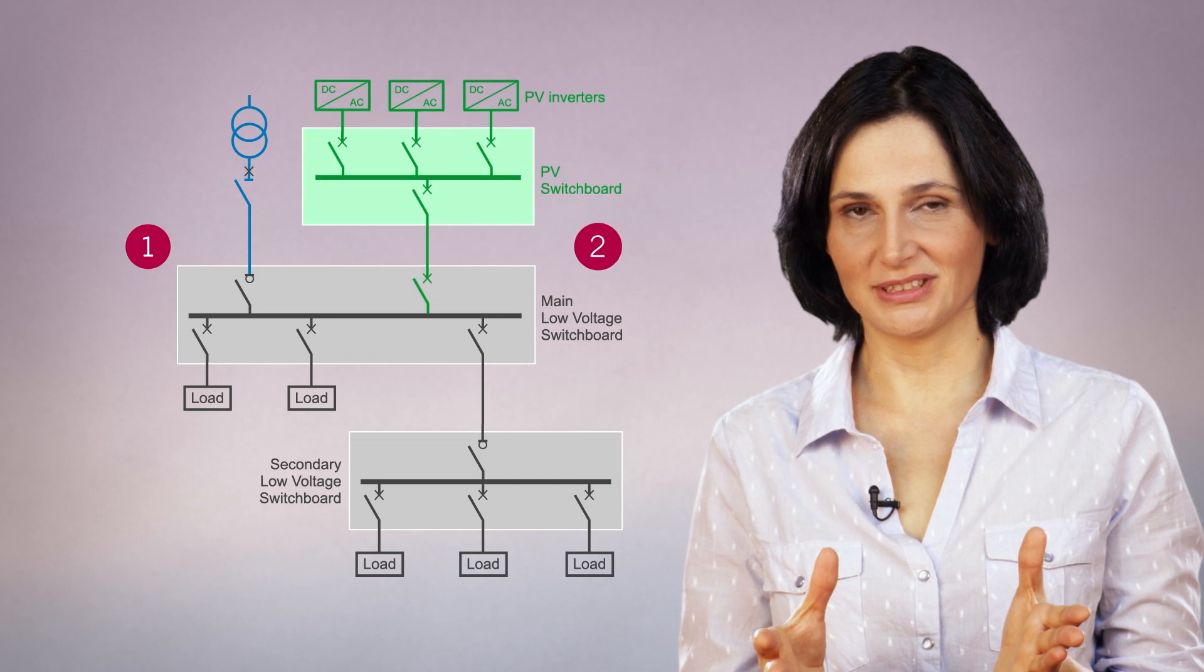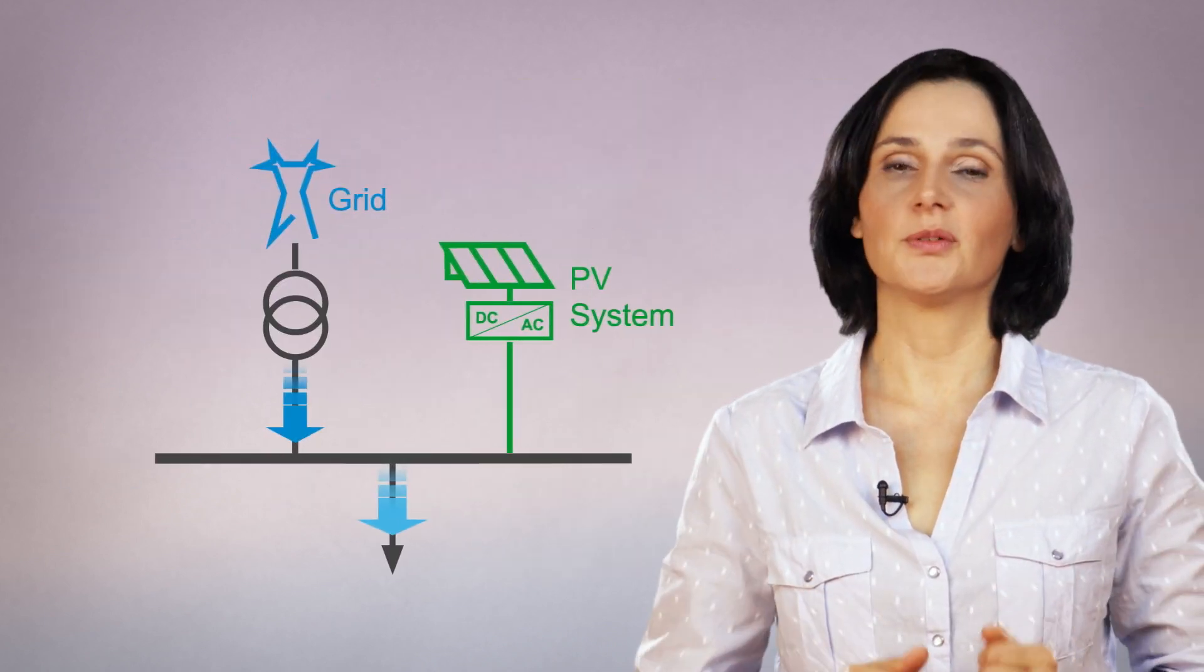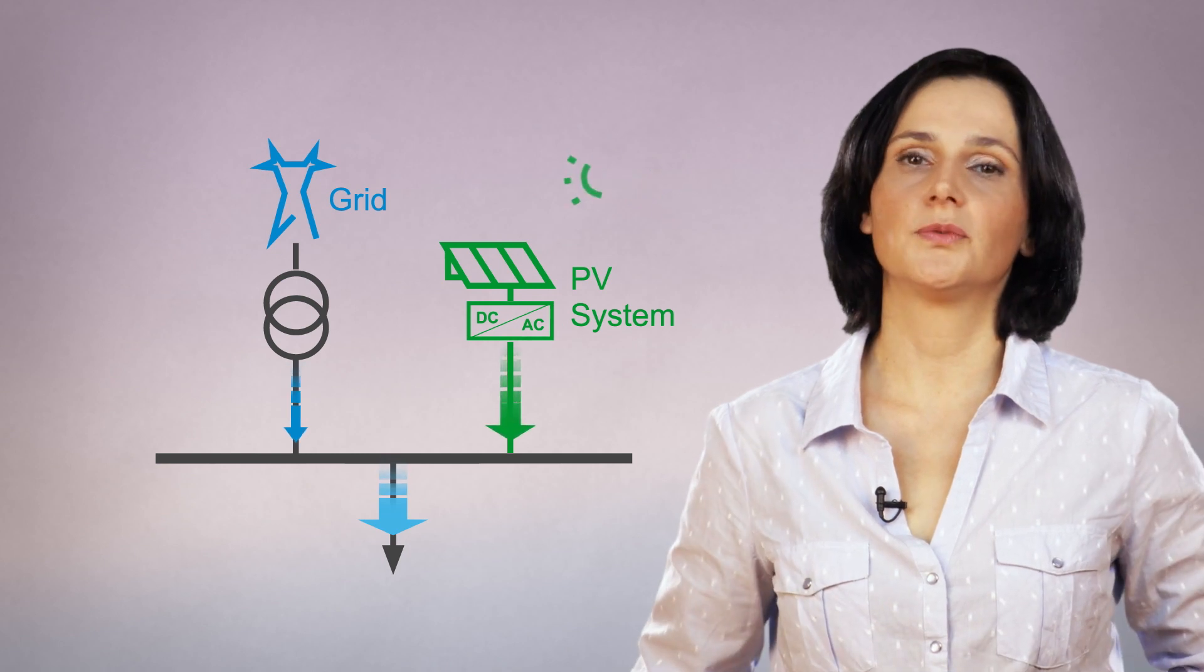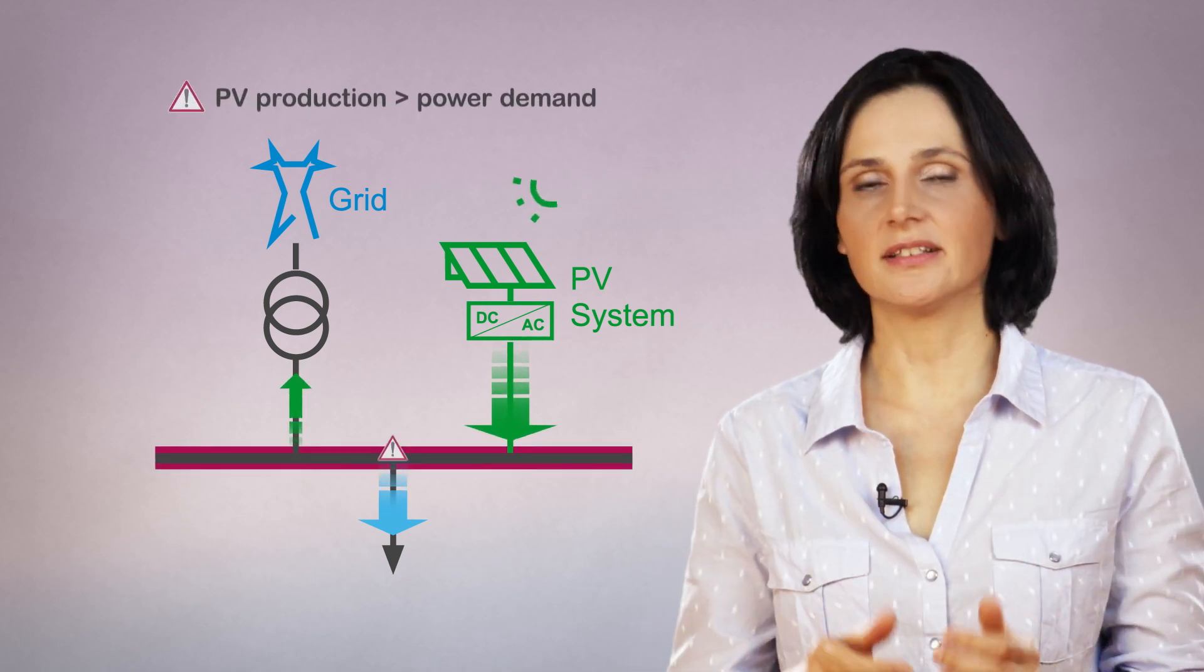In summary, electrical installation equipment must be selected taking into account all electrical installation operating modes. The impact on the equipment sizing is significant, especially when the added photovoltaic production is higher than the power demand.